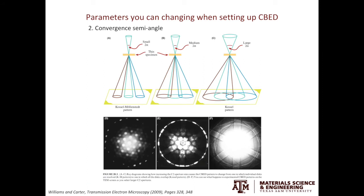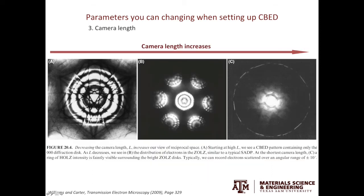The second parameter you can play with is the convergence semi-angle. The larger the convergence semi-angle, the bigger the disks. To converge the electron beam to a spot while controlling the convergence angle, you can play with the spot size and the condenser aperture you select. A large condenser aperture and small number for the spot size will lead to a large convergence semi-angle. As shown in the textbook example, as the convergence semi-angle becomes larger and larger, the disks will start overlapping.